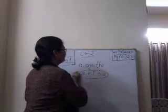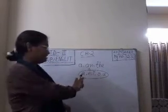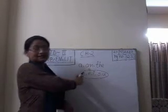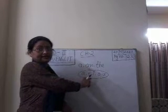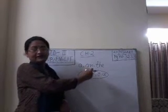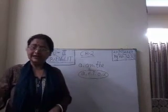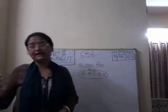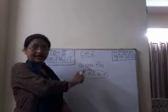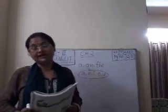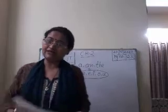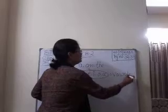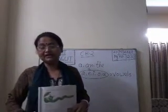So these are vowels. Any noun that begins with a, e, i, o, u — before those nouns we put 'an'. Suppose apple — an apple. E for egg — an egg. I for ink — an ink. O for ox — an ox. U for umbrella — an umbrella. So we use 'an' before the naming word or before the noun that begins with vowels. These are called vowels, and the rest are consonants. Before consonants we use 'a'.